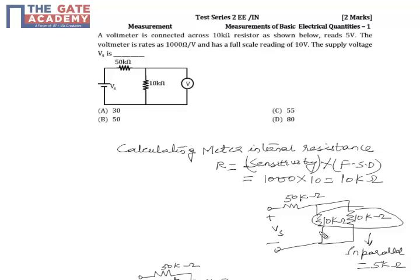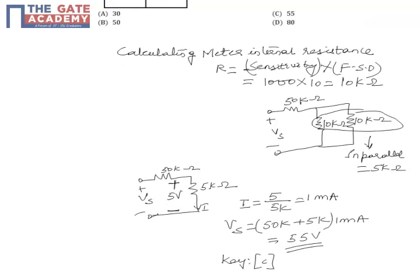Now I will redraw the circuit by representing the voltmeter as a resistor, which is 10 kilo-ohm. We can simplify this circuit.